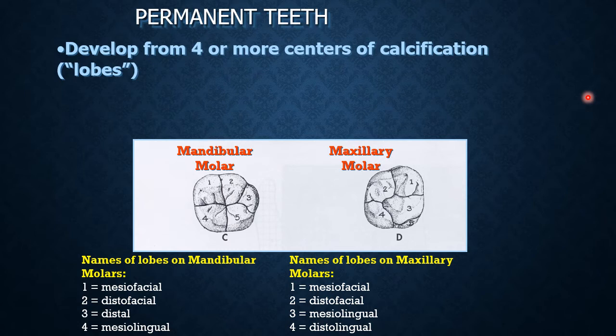In summary, permanent teeth either develop from four or more centers of calcification. These centers of calcification — the lobes — delineate or demarcate the primary parts of the tooth.